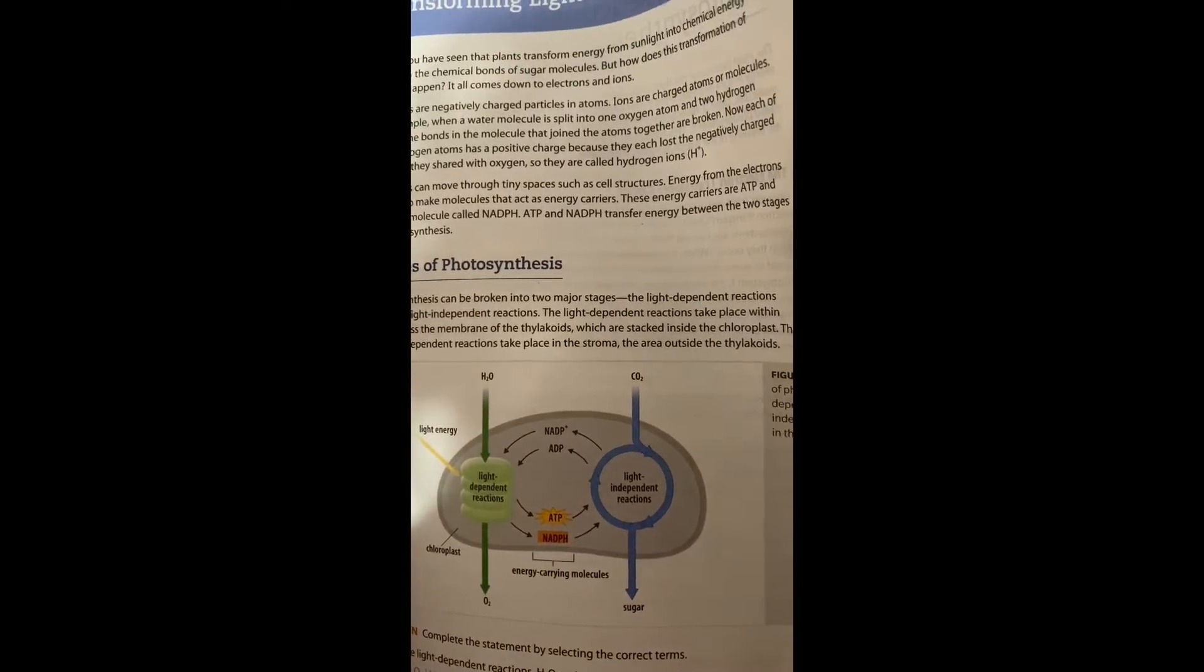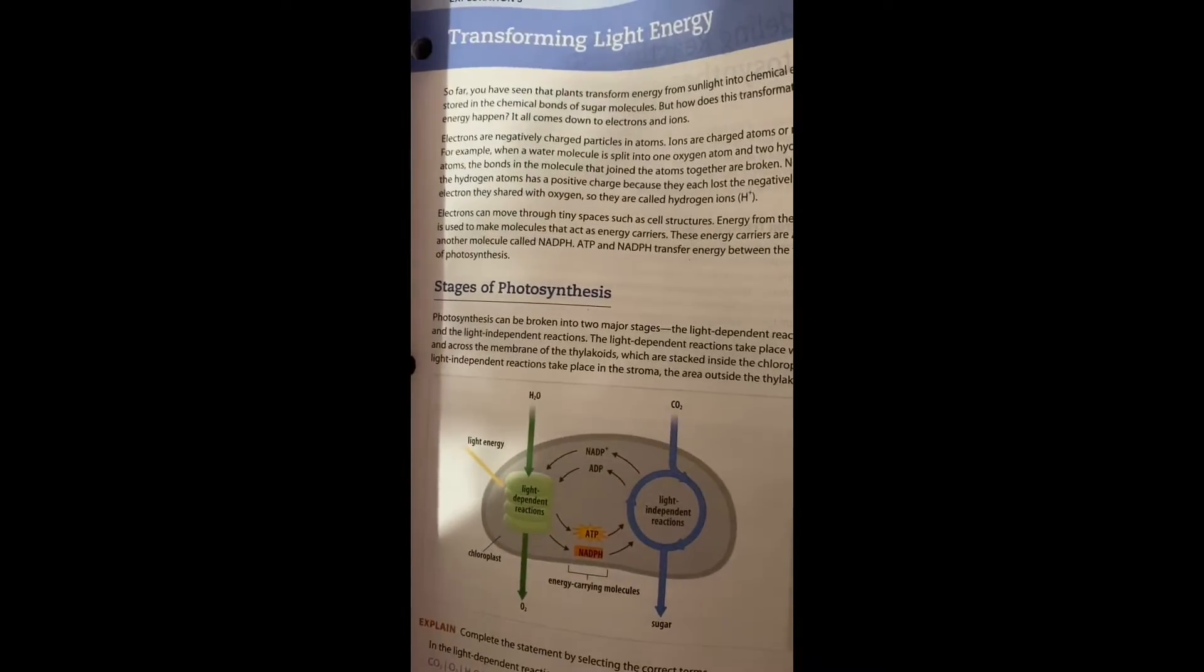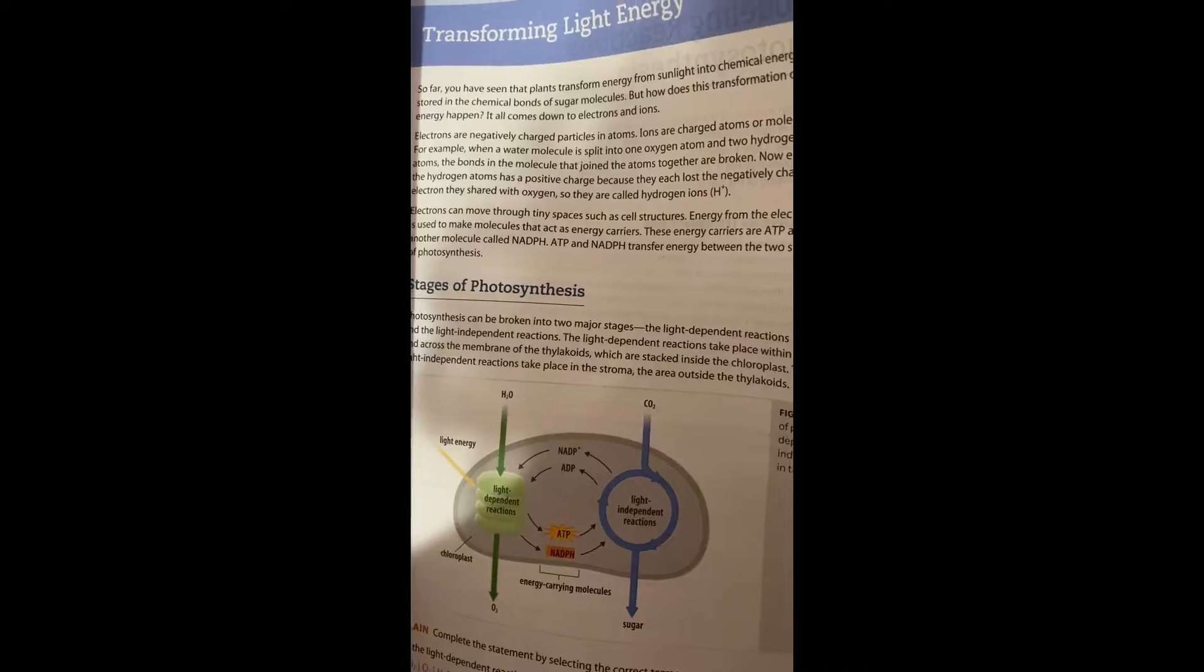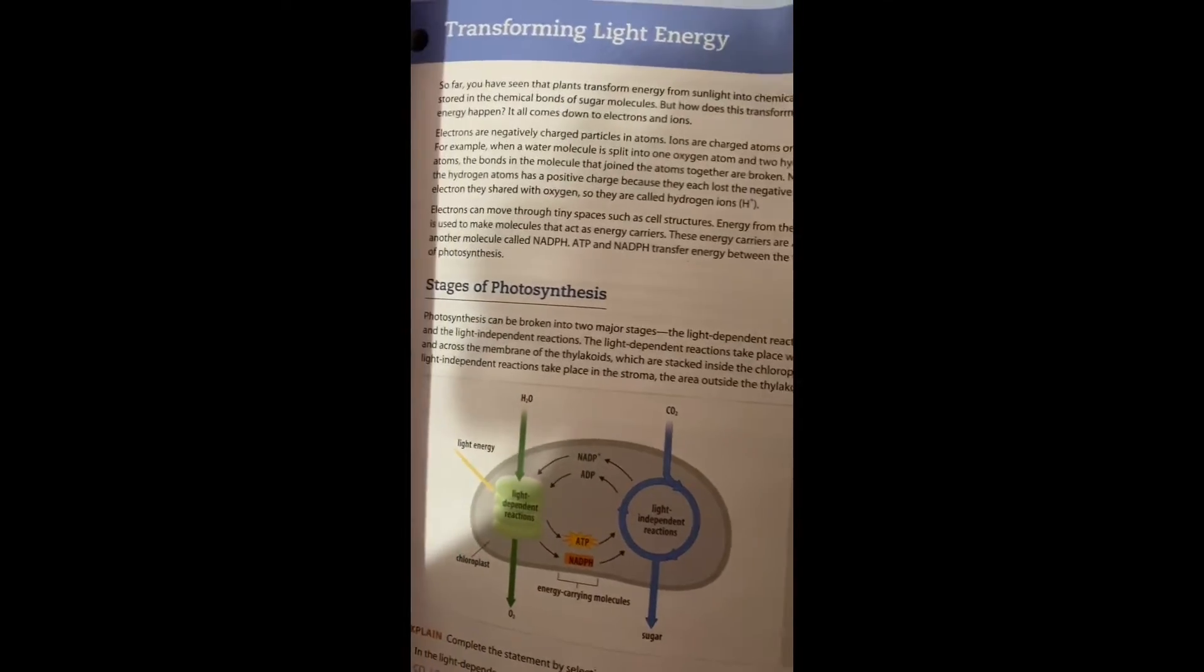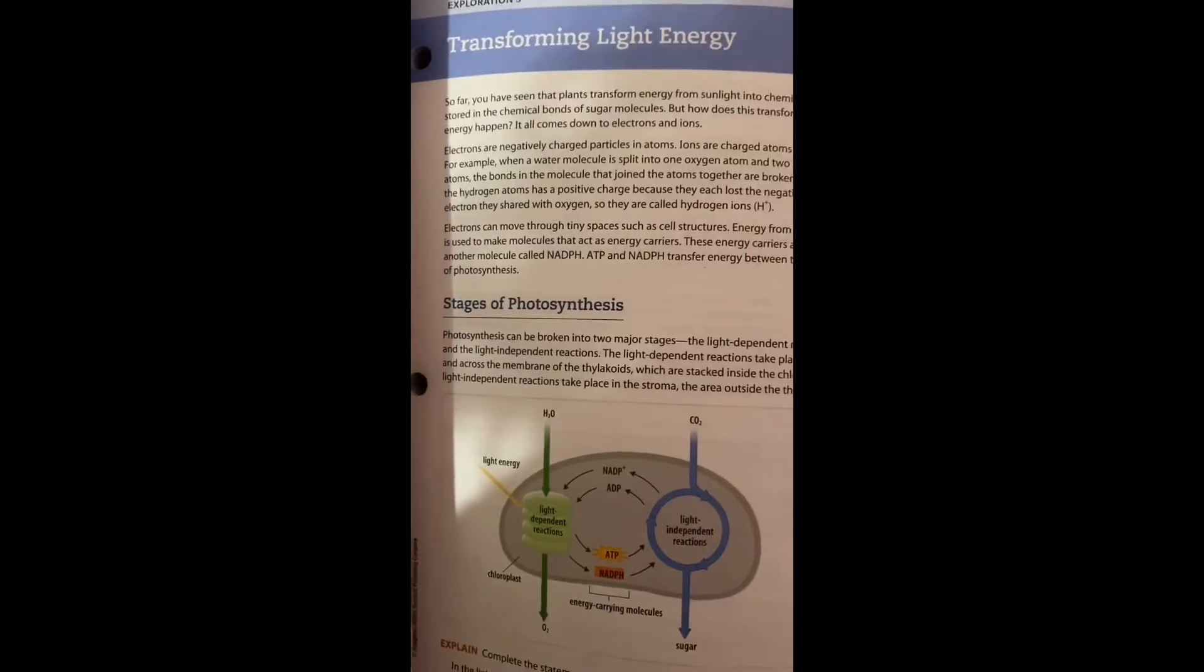So in a water molecule, one oxygen atom and two hydrogen atoms - the bonds in the molecule that join the atoms together are broken. Now each of the hydrogen atoms has a positive charge because they lost a negatively charged electron they shared with oxygen. So they are called hydrogen ions.